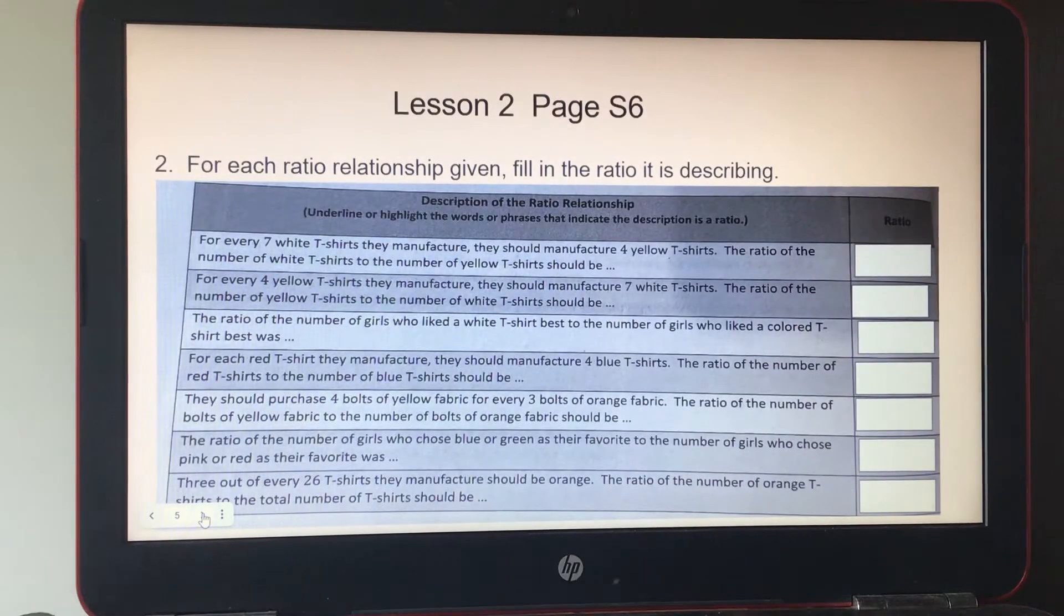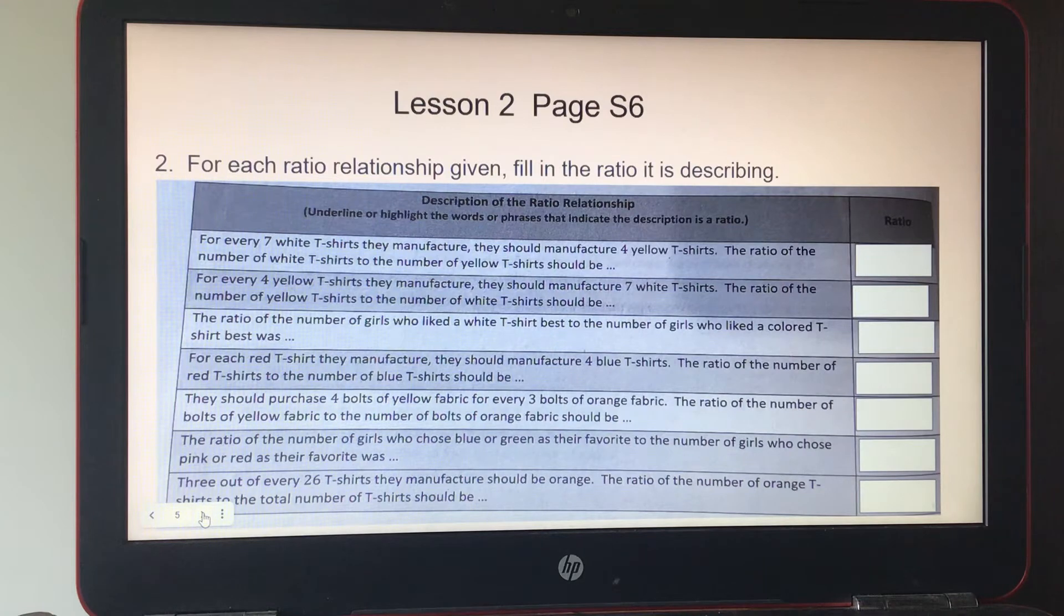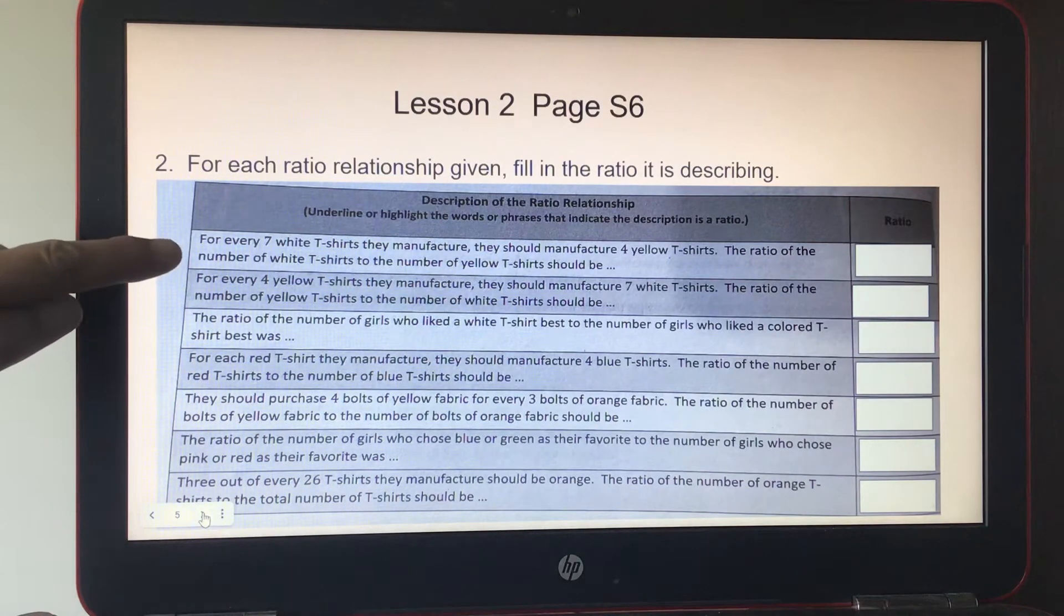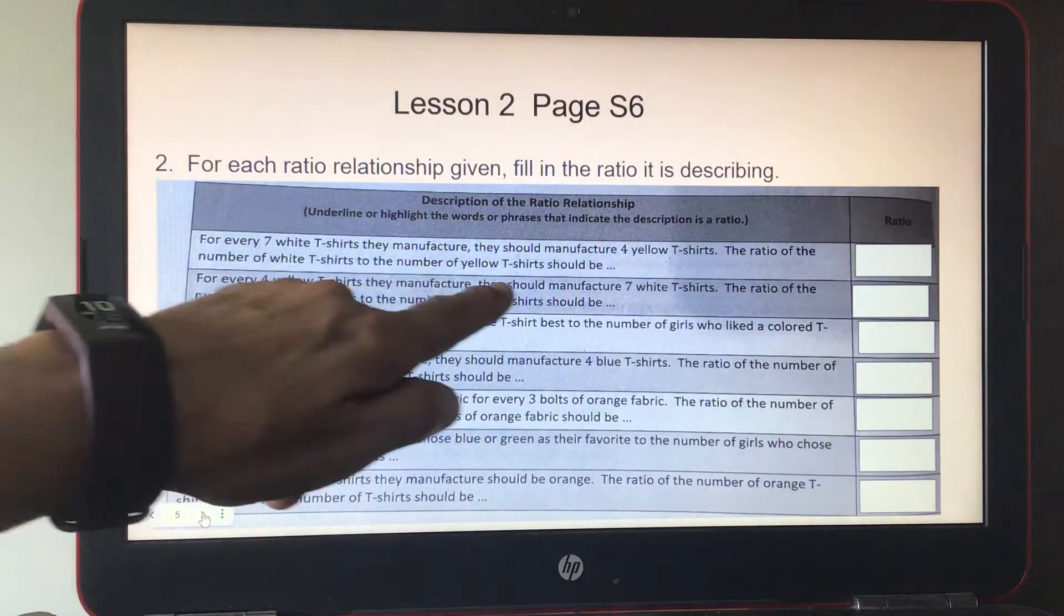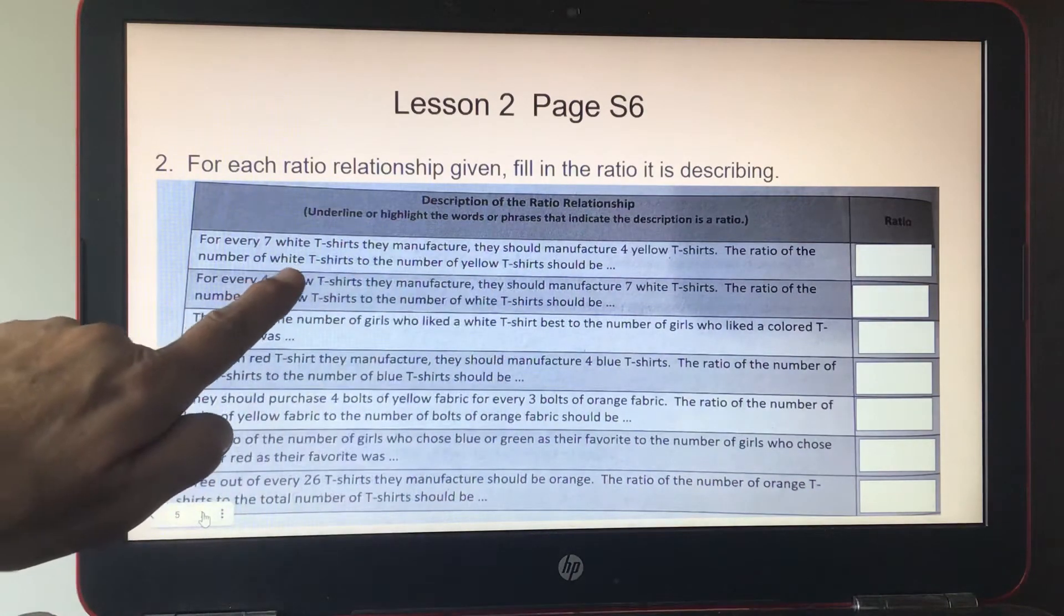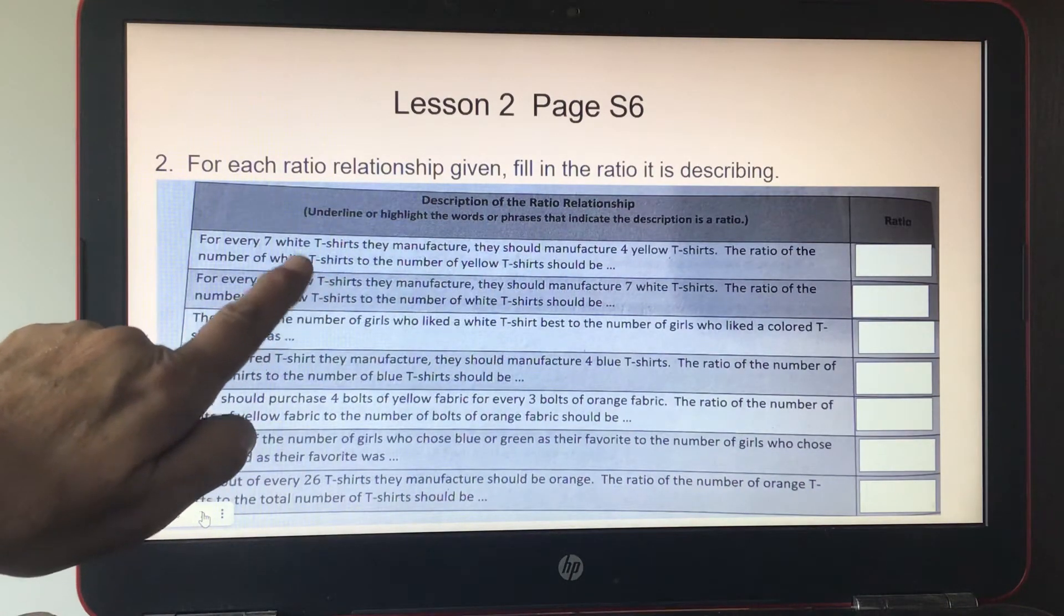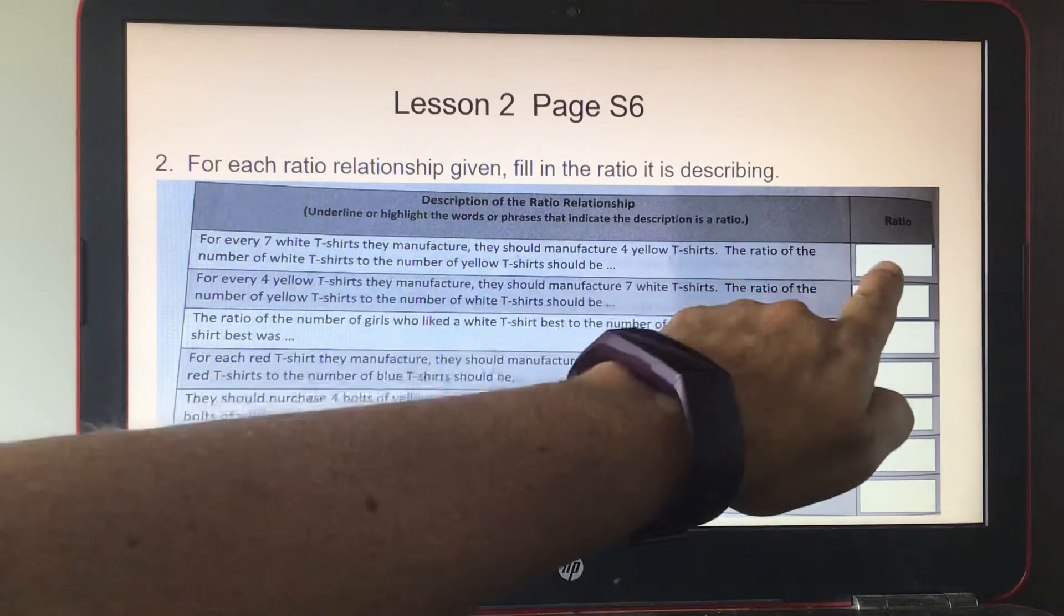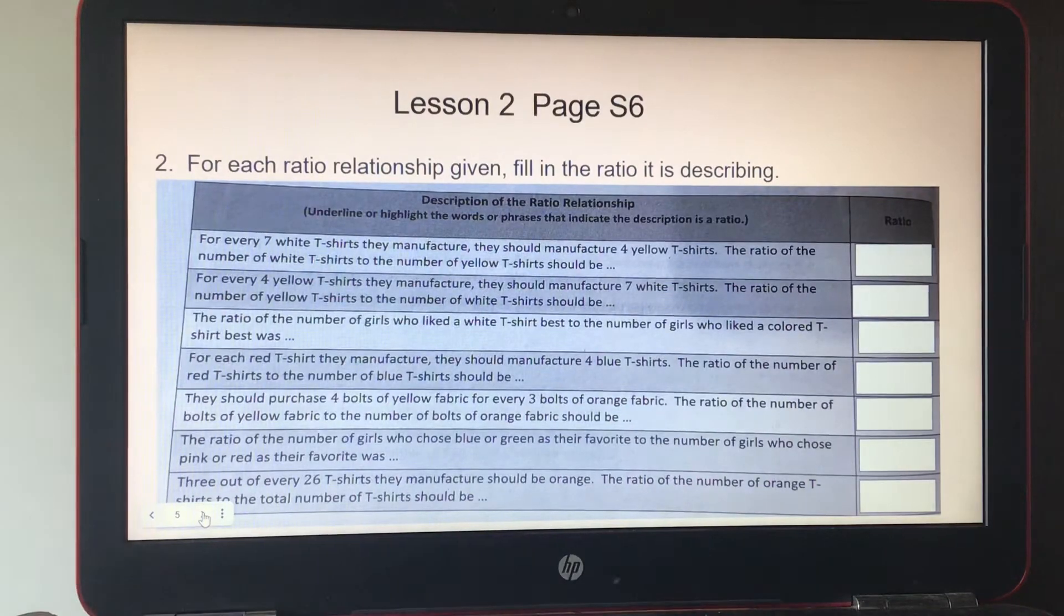It says for each ratio relationship given, fill in the ratio it is describing. This is page S6. For every seven white t-shirts they manufacture, they should manufacture four yellow t-shirts. The ratio of the number of white t-shirts to the number of yellow t-shirts should be... You always go with what they said first for the first number. So it should be seven to four.